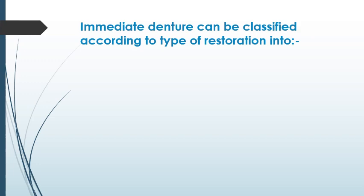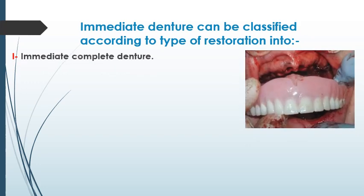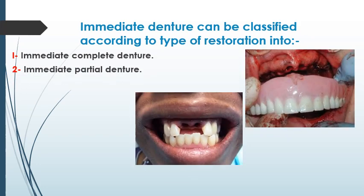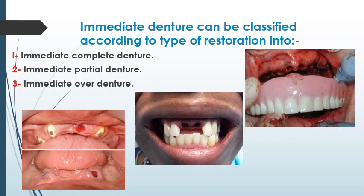Immediate denture can also be classified according to the type of restoration into three categories: first, immediate complete denture; second, immediate partial denture; and third, immediate overdenture.